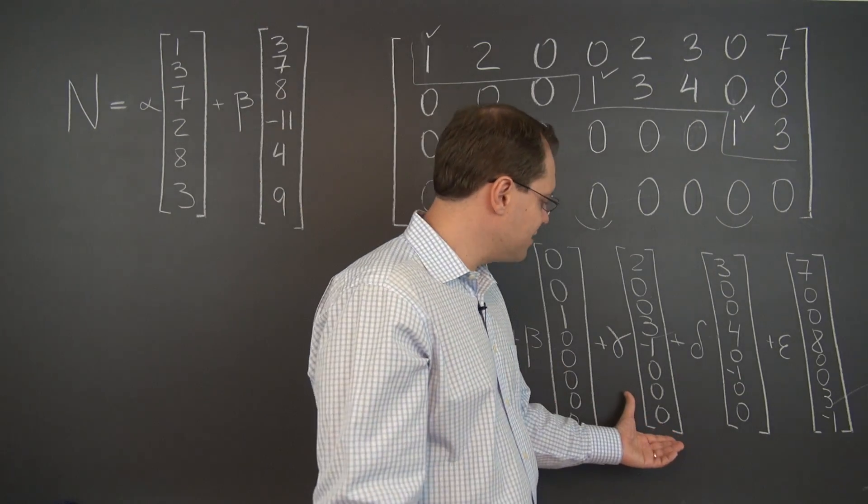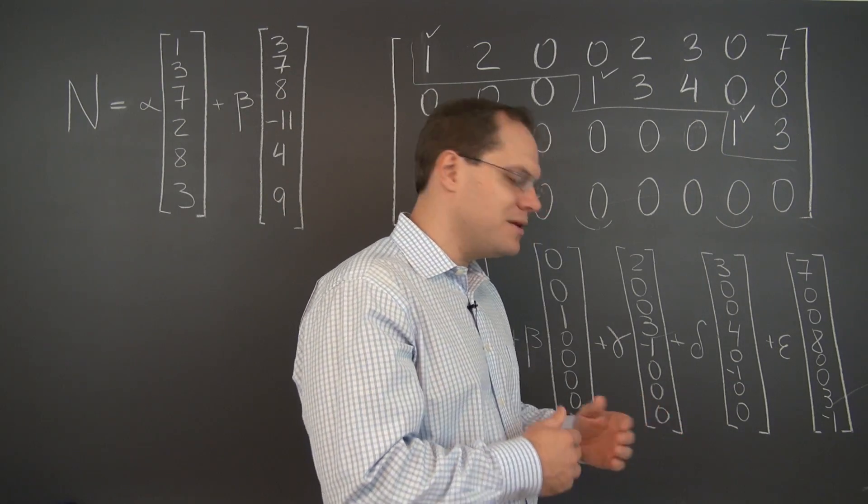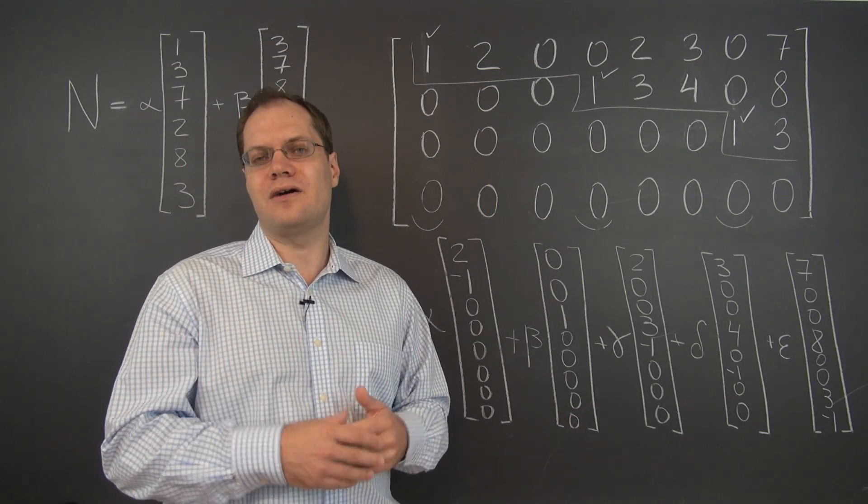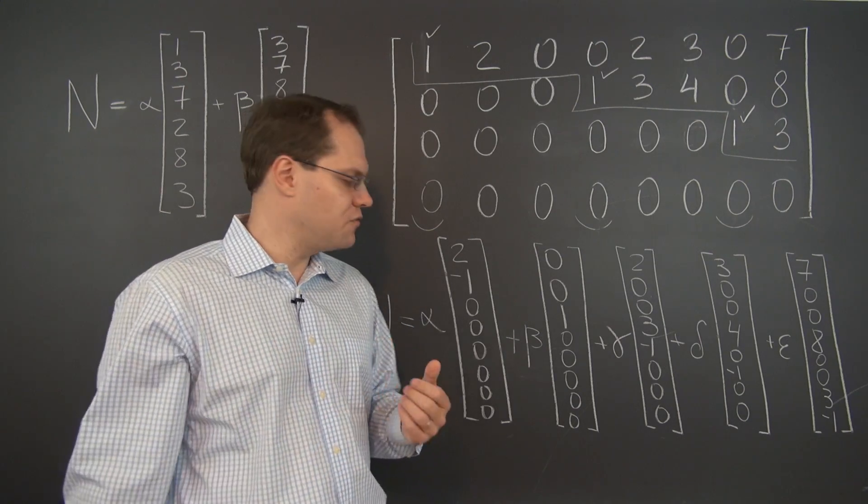And then looking at this, we know that the third column is all zeros. Maybe looking at this column, at this element of the null space, we'll be able to determine the next column of the row reduced echelon form and so forth.